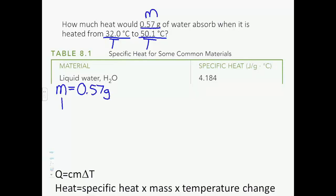We can write it right here. Mass equals 0.57 grams. Temperature initial equals 32.0 degrees Celsius, because it's heated from 32 to 50 degrees. And that means your temperature final equals 50.1 degrees Celsius. The question also asks us, how much heat? Do you remember what our symbol was for heat on the previous page? That's right, Q. So our Q is what we are solving for, because it says how much?